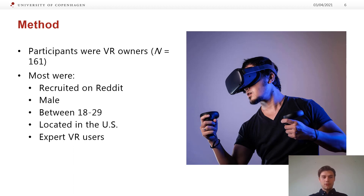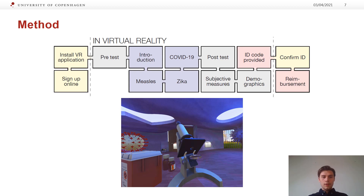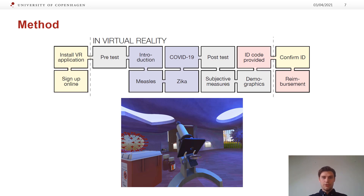Most of the participants were young males located in the US who identified as expert VR users. When starting the application, a pre-test assessed their prior knowledge about viral diseases. This was followed by the core learning material about measles, Zika, and COVID-19, taught by one of the five virtual instructors. Afterwards, a post-test measured the knowledge again and collected subjective measures.